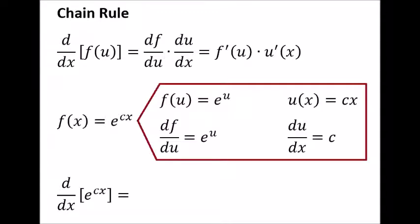For e to the cx we have two functions. f of u is e to the u. This is the outside function. u of x is c times x. This is the inside function. df/du equals e to the u. We already demonstrated in an earlier lesson why this function is equal to its own derivative. du/dx equals the constant c by the power rule of differentiation.